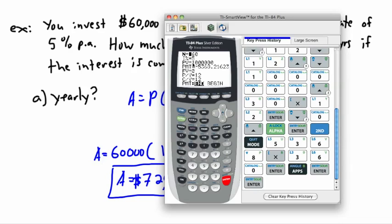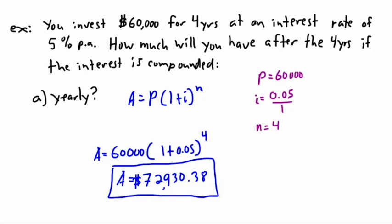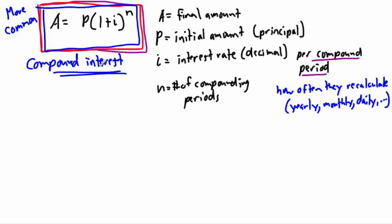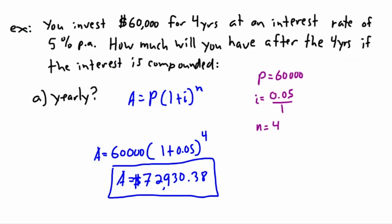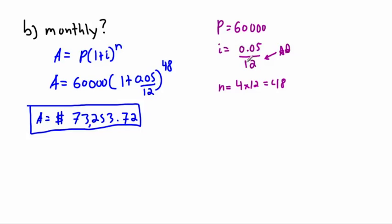A lot of people think they'll just pay five percent more, but the bank charges five percent on the outstanding amount every month. So you end up paying 1.9 million total to borrow one million. This is why you need to be very careful with loans. The TVM Solver is really useful, but the key takeaway is to always use the compound interest formula per compounding period — dividing the rate by the number of compounding periods per year.